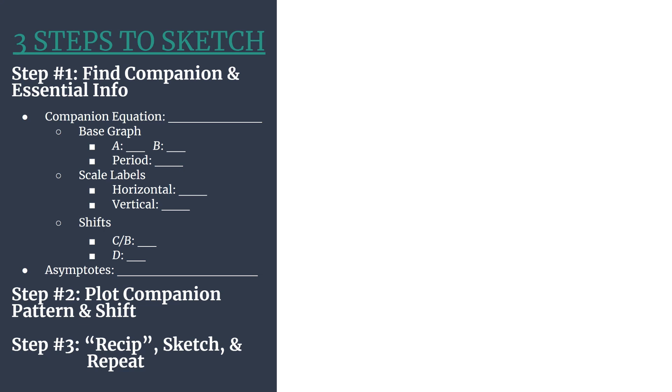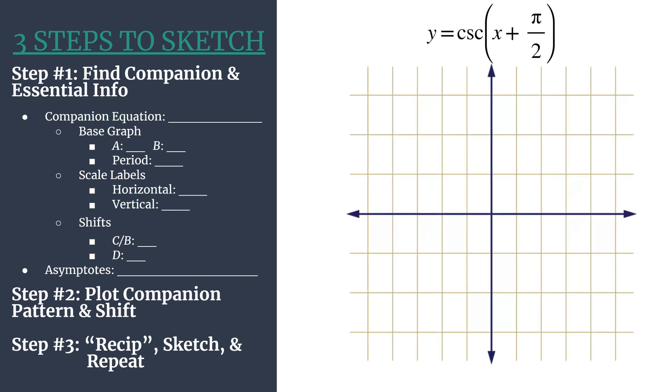Here is the template. This is a somewhat involved process, but once you use this method and stay organized a couple of times, you will become an expert at graphing these shifted cosecant graphs. Here's our equation in a grid, and we're going to jump right in. Step one is our biggest step where we really do our organization, and what we do is we find our companion equation and its essential information.